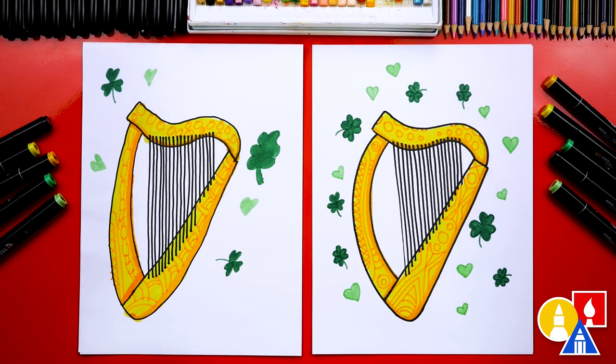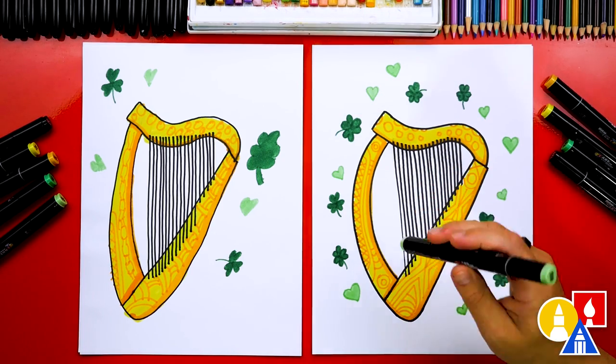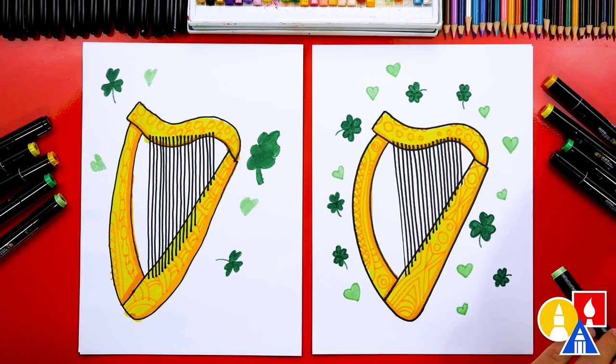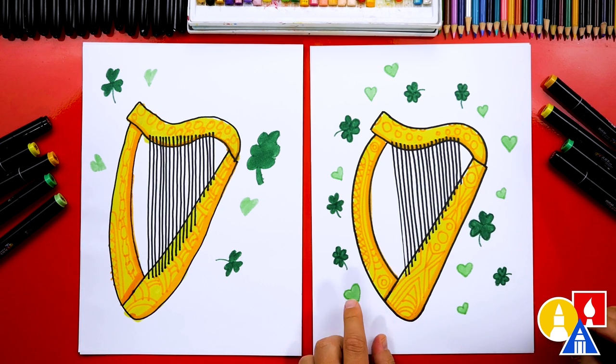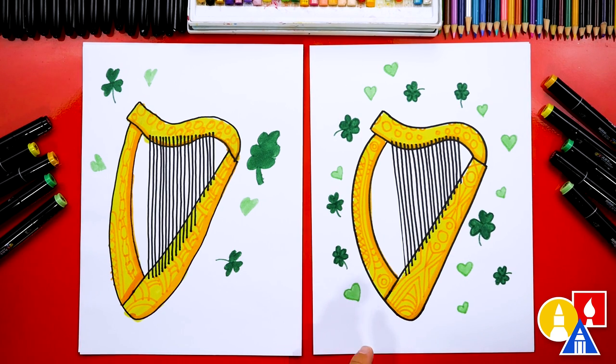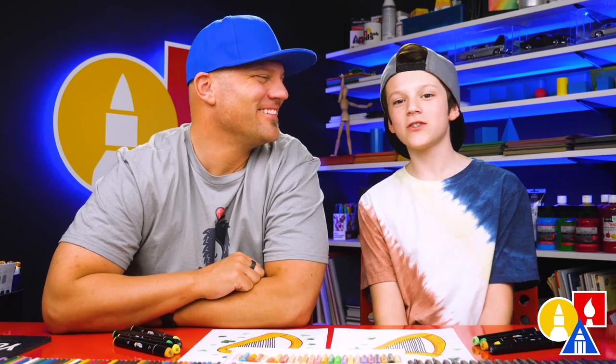We used our Art for Kids Hub markers. If you had the same set, the colors that we used, well, we used two greens, 46 and 59. 46 is the darker green and 59 is the lighter green. Then we also used the yellow color. What number is that? 35. And we also used an orange color, 301 for the designs. We hope you had a lot of fun drawing your harp.